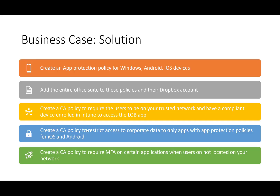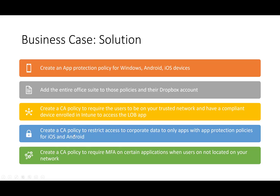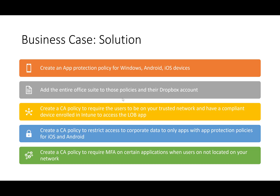For the LOB app requiring network access and Intune enrollment, we create a conditional access policy requiring users to be on the trusted network with a compliant device enrolled in Intune, so we know the device is healthy. For the Office Suite, to allow personal device access outside the network while preventing downloads, we create a policy restricting saving of Word and Excel documents to personal devices. For apps with sensitive company info, we create a conditional access policy requiring MFA when users are not on the corporate network.